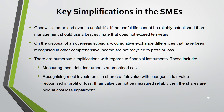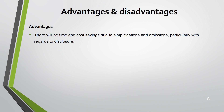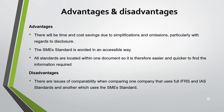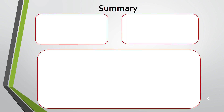Advantages of IFRS for SMEs include cost and time savings. The standard is worded in an accessible way, and all standards are located in a single document, making information easier to find. Disadvantages include comparability issues — when one company uses full IFRS and another uses the SME standard, comparison is difficult. Additionally, even with simplifications, the standard is still very complex for very small businesses, particularly since areas like leases and deferred tax have not been simplified.